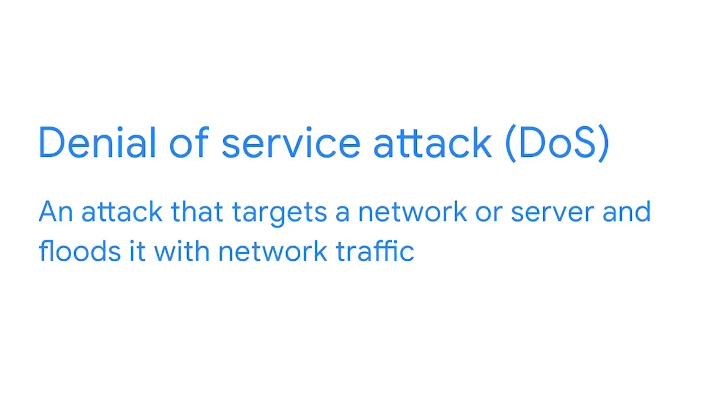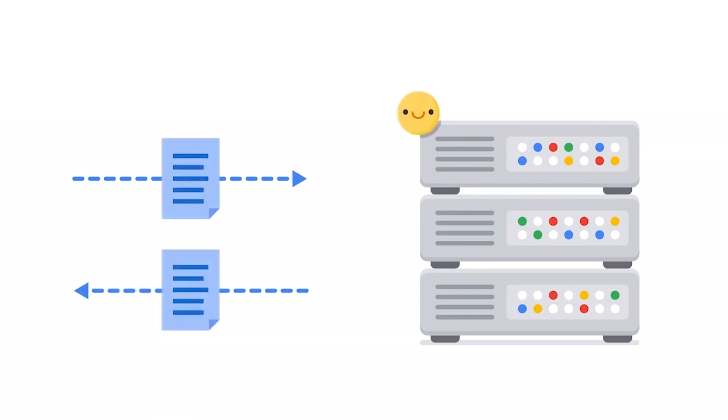Now you know why it's so important to secure a network. To keep a network secure, you need to know what kinds of attacks to protect it from. A denial of service attack is an attack that targets a network or server and floods it with network traffic. The objective of a denial of service attack, or DOS attack, is to disrupt normal business operations by overloading an organization's network.